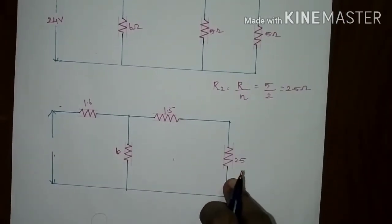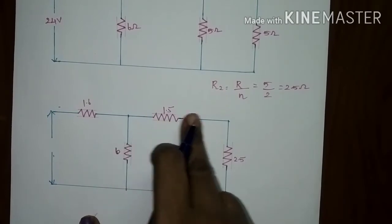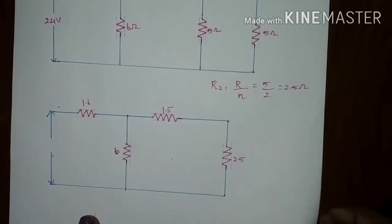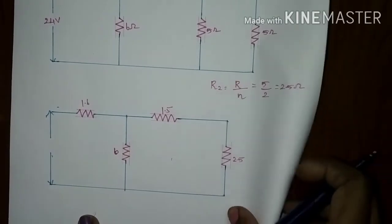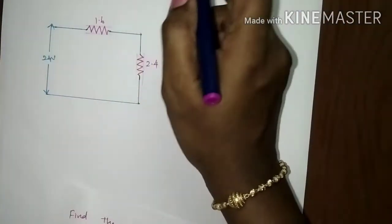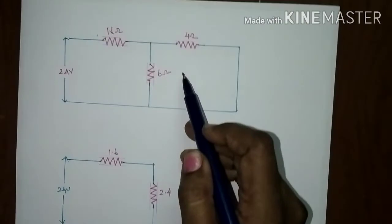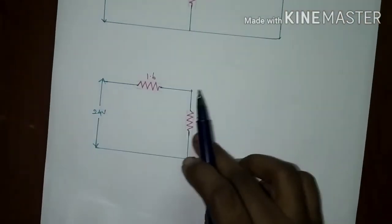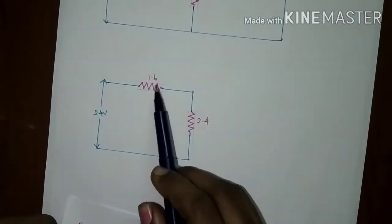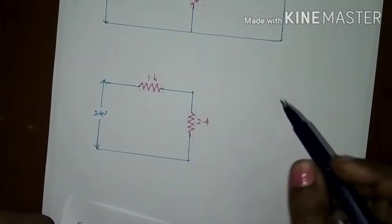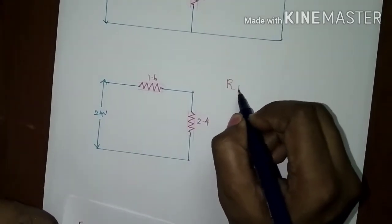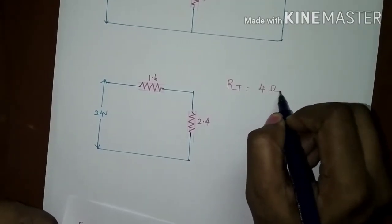This 2.5 ohms and 1.5 ohms are connected in series. Adding together we will get 4 ohms. Then 4 ohms and 6 ohms will be in parallel, giving a value of 2.4, and this 1.6 and 2.4 will be in series. We will get again R equal to 4 ohms, so R total resistance is equal to 4 ohms.